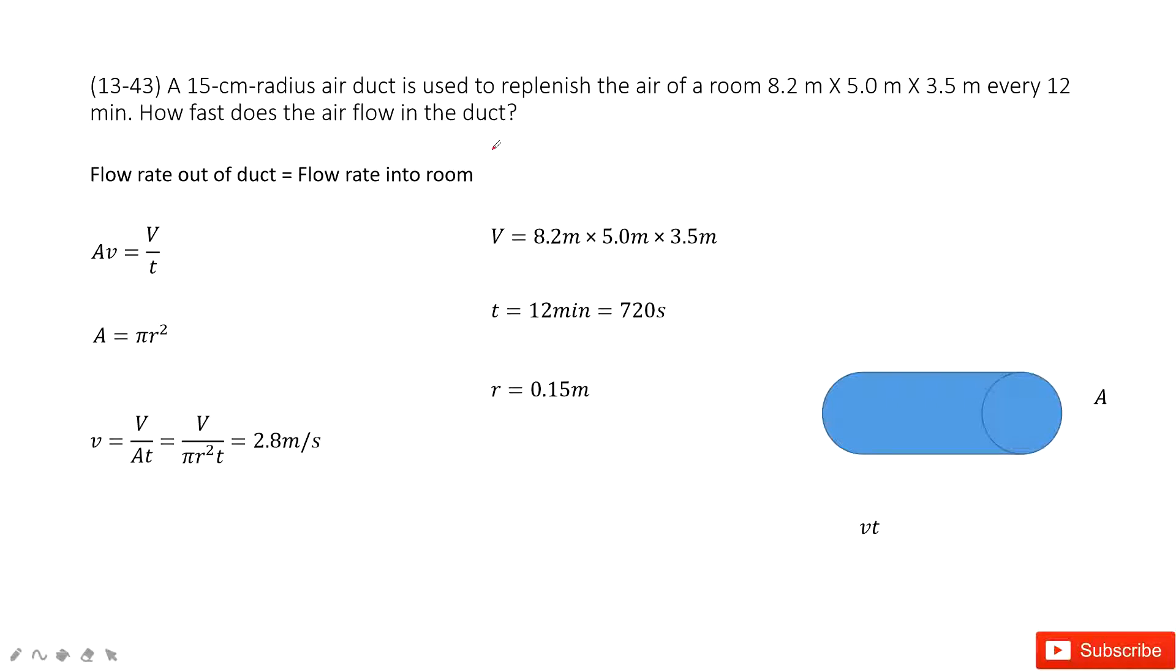In this one we need to find the flow rate out of the duct of a room. And this one we can consider it is just equal to flow rate into the room.